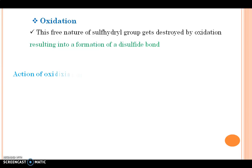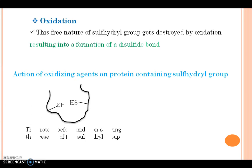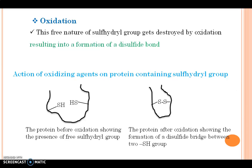Here is the action of oxidizing agents on protein containing a sulfhydryl group. This is the protein before oxidation showing the presence of a free sulfhydryl group, whereas after oxidation it shows the formation of a disulfide bridge between two SH groups.